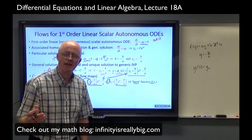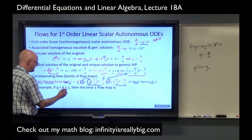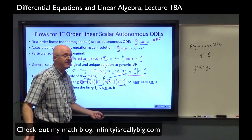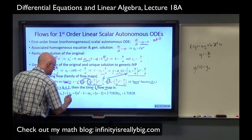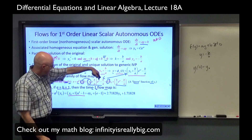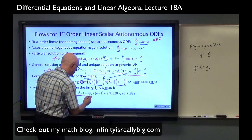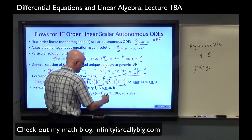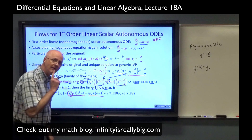Let's look at an example. Take a equals 1, b equals 1, and look at the time-one flow map where t equals 1. Plugging in a, b, and t all equal to one, b over a equals one, and a times t equals one. The time-one flow map expands out to e times y-zero plus e minus one. So e is the slope of this function and e minus one is the intercept, giving approximate slope 2.71828 and approximate vertical intercept 1.71828.